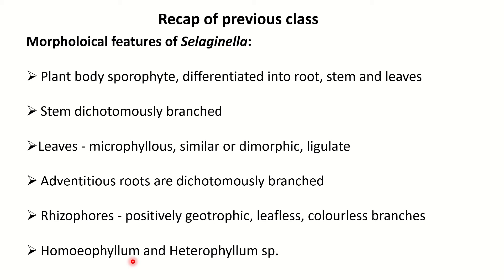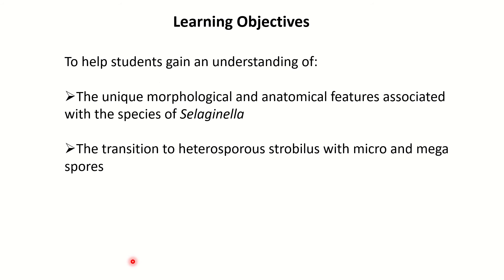Both homophyllous and heterophyllous species are present — homo means similar leaves, while hetero means different sizes and shapes of leaves are present. The objective of this lesson is to help students gain an understanding of the unique morphological and anatomical features of Selaginella, and the transition to heterospory with micro and megaspores in the strobulus.